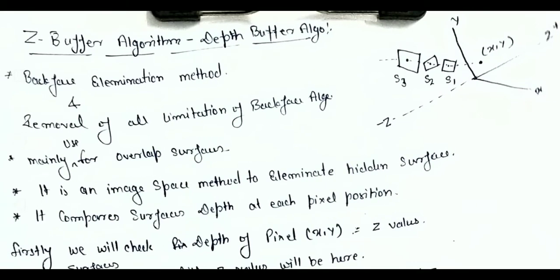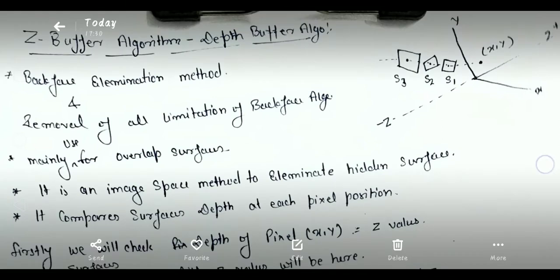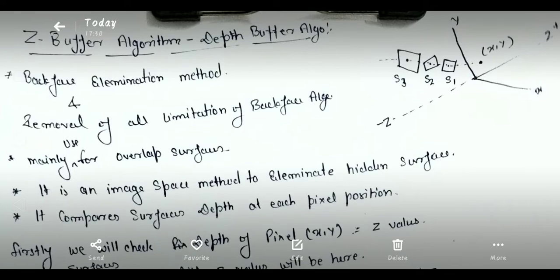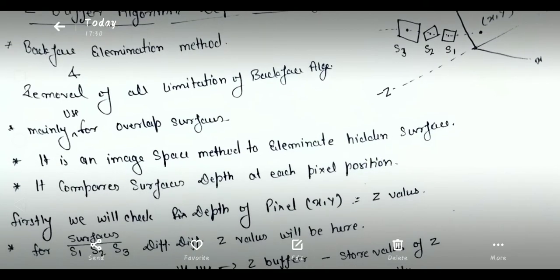In this example, you can see the x-axis, y-axis, positive z-axis, and negative z-axis. At one point x-comma-y, that pixel has some overlapping surfaces — S1, S2, and S3. Every pixel has some intensity value on each surface. The Z-buffer algorithm is used for these overlapping surfaces and uses the image-space method for eliminating back-face or hidden surfaces.